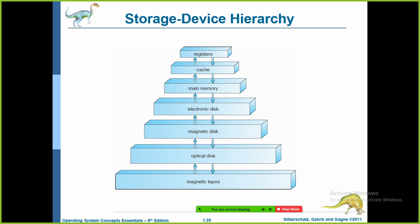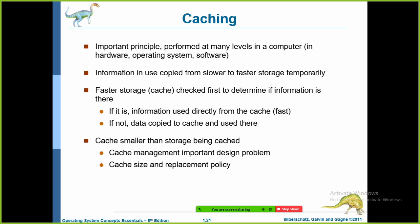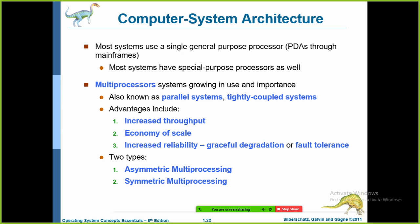The design of a complete memory system must balance all these factors — it must use only as much expensive memory as necessary, while providing as much inexpensive storage as possible. Next, we are going to look at computer system architecture.